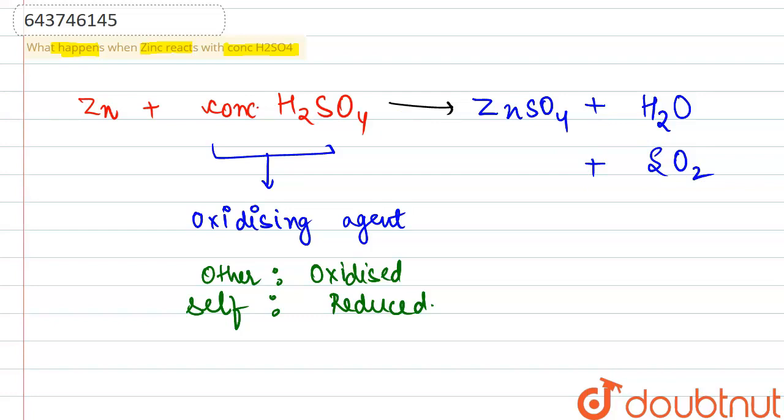This is how the reaction happens. If we talk about the balancing, we would be requiring two moles of concentrated sulfuric acid here, and two moles of water would be formed. The reaction is also balanced now, and these are the products.